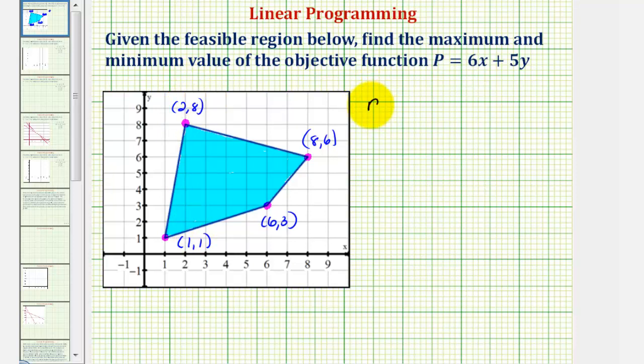Now we'll find P(1, 1), so we'll substitute 1 for x and 1 for y. We'd have 6 times 1 plus 5 times 1, which equals 11.